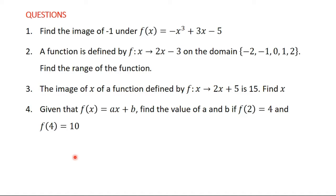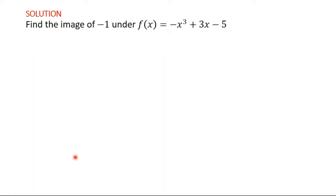We have about four questions to solve one after the other. The first: find the image of negative 1 under f(x) = -x³ + 3x - 5. Here, negative 1 is in the domain and we have to find its corresponding image. To find the image of negative 1, we need to find f(-1).